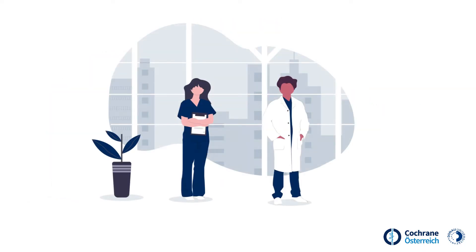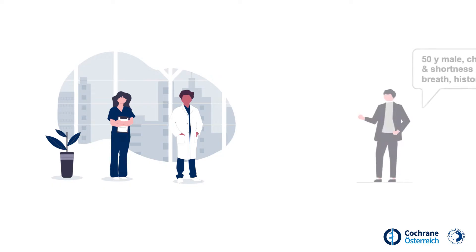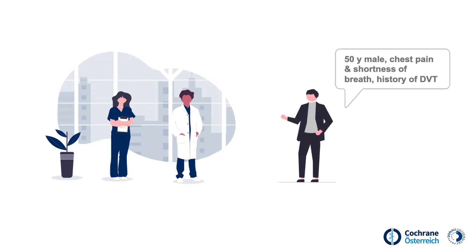Let's think about a scenario in a family practice. A 50-year-old man consults his general practitioner due to breathing-dependent chest pain. The patient reported a previous history of deep vein thrombosis in the lower extremity. What is the most probable clinical diagnosis? If we consider pulmonary embolism as a likely diagnosis, which tests should be performed?